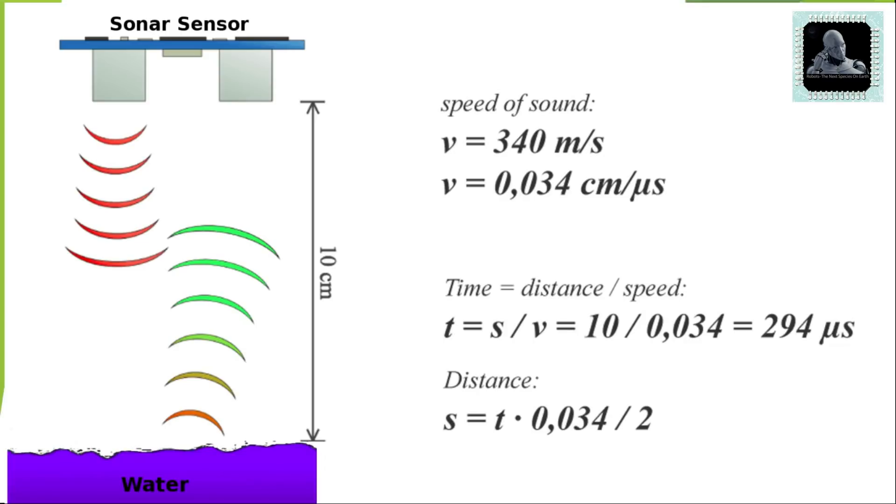In this case sonar sensor will be placed on the top of the water tank. Here the obstacle would be the water. Water level can be calculated using the formula shown here. The measured water level in centimeters will be further converted into water level diagram.